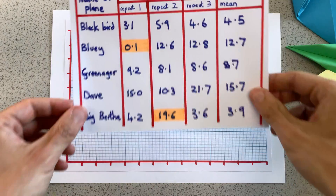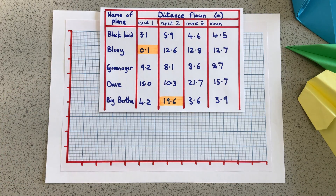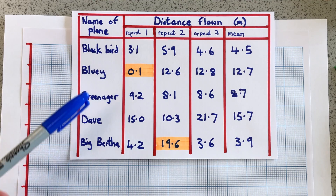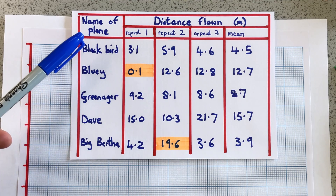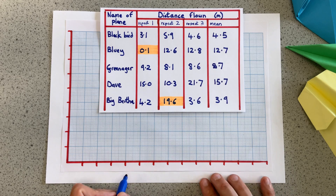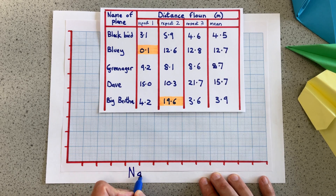Here are the results. In an experiment, the thing we change is called the independent variable, and that's normally found in the first column of a results table. For us, the independent variable is the plane. On a graph, the independent variable goes on the x-axis.